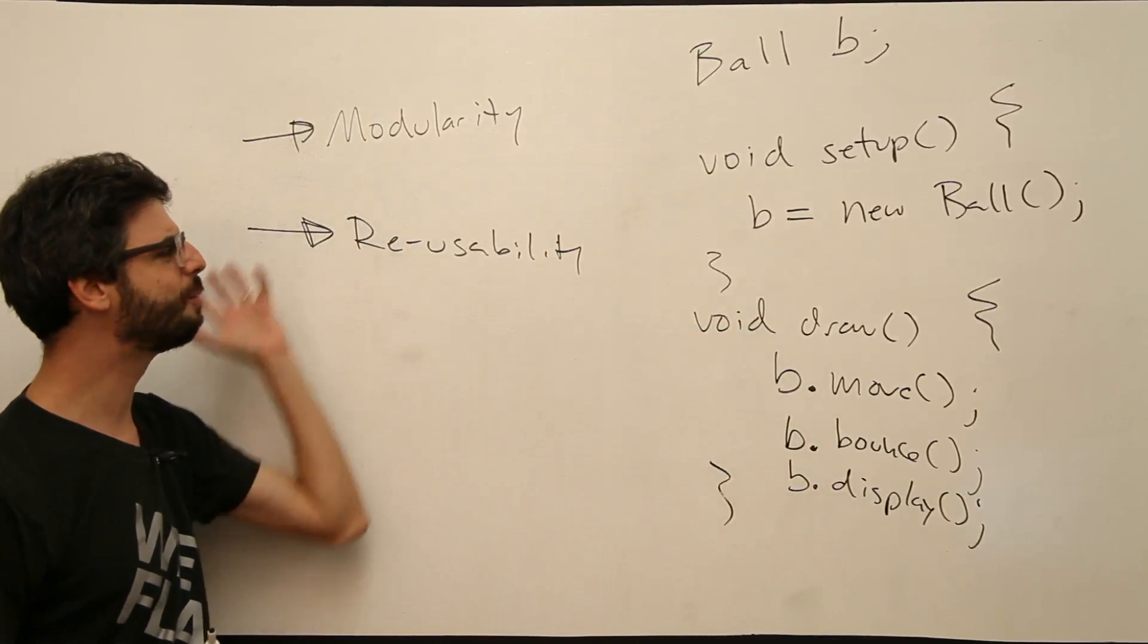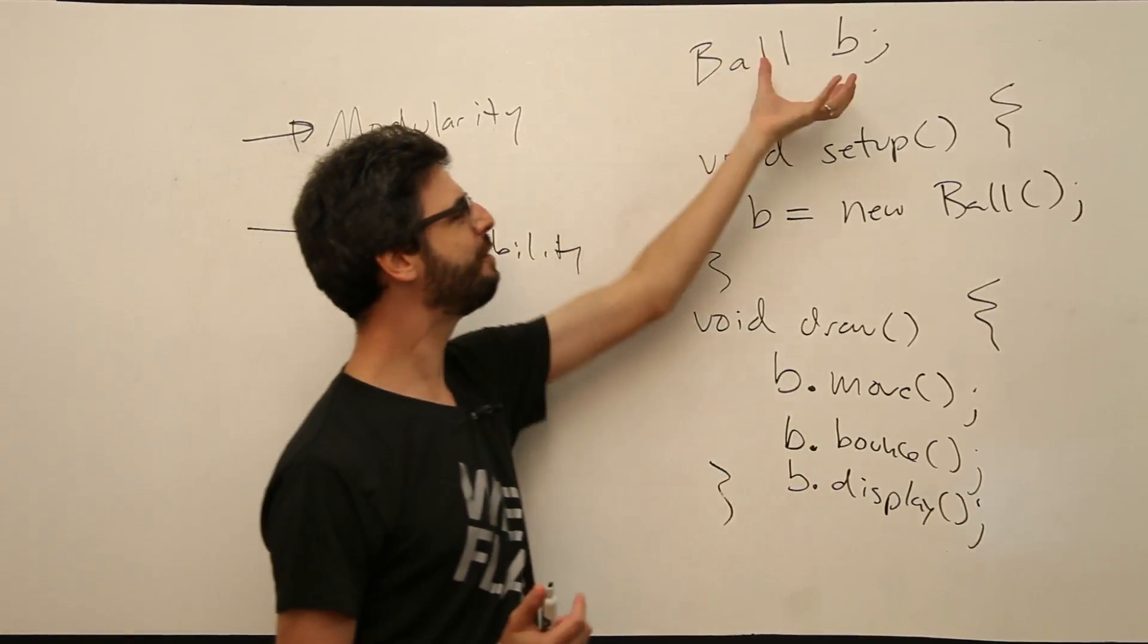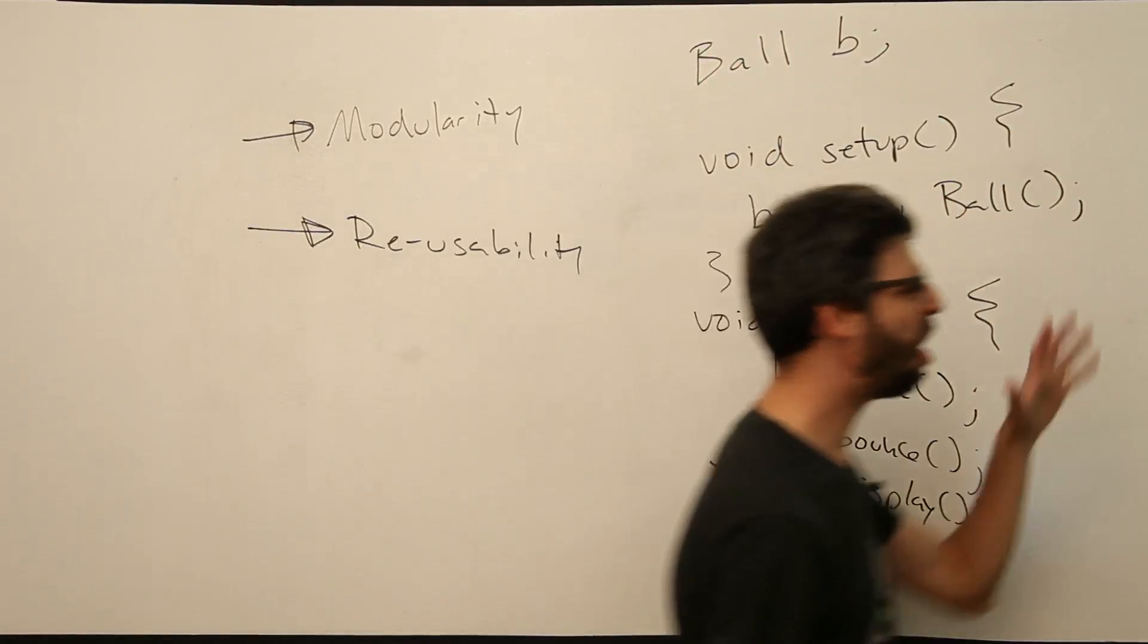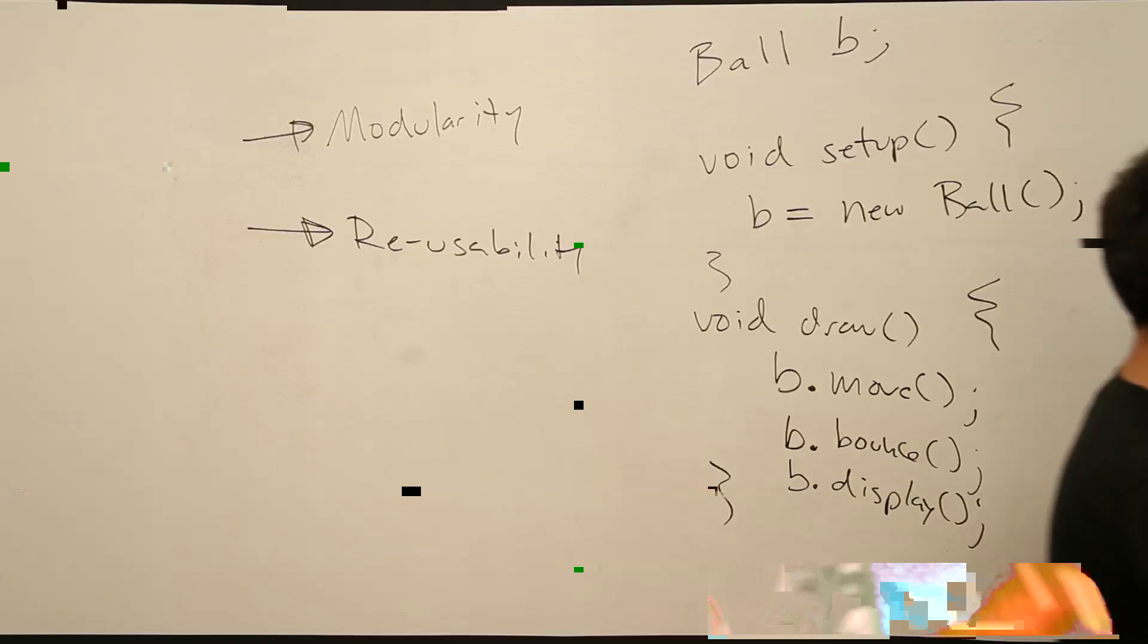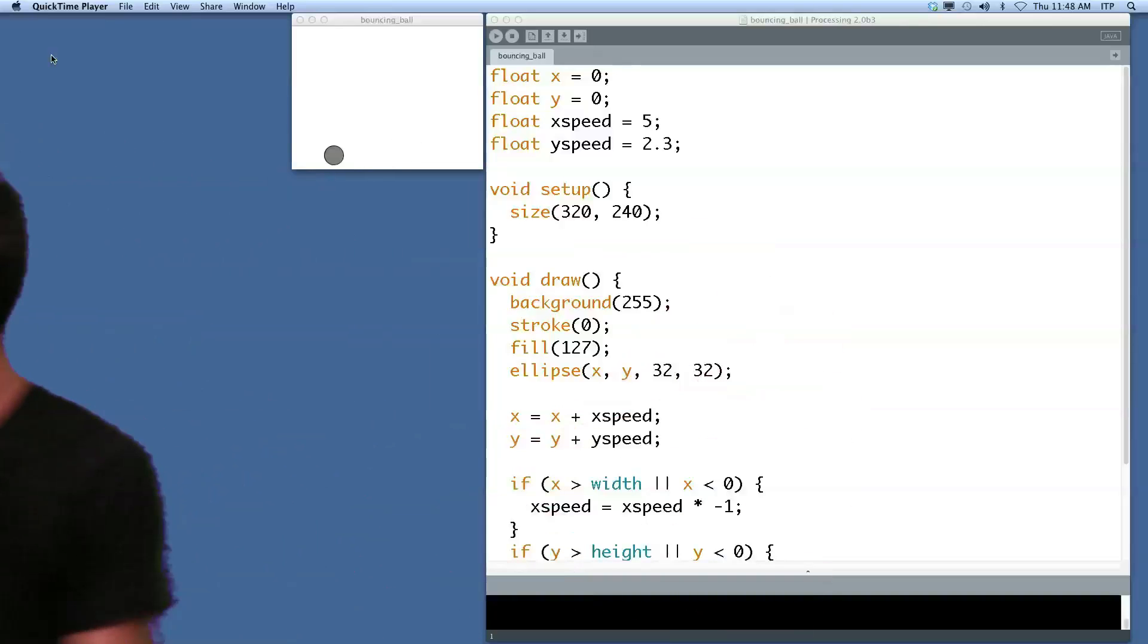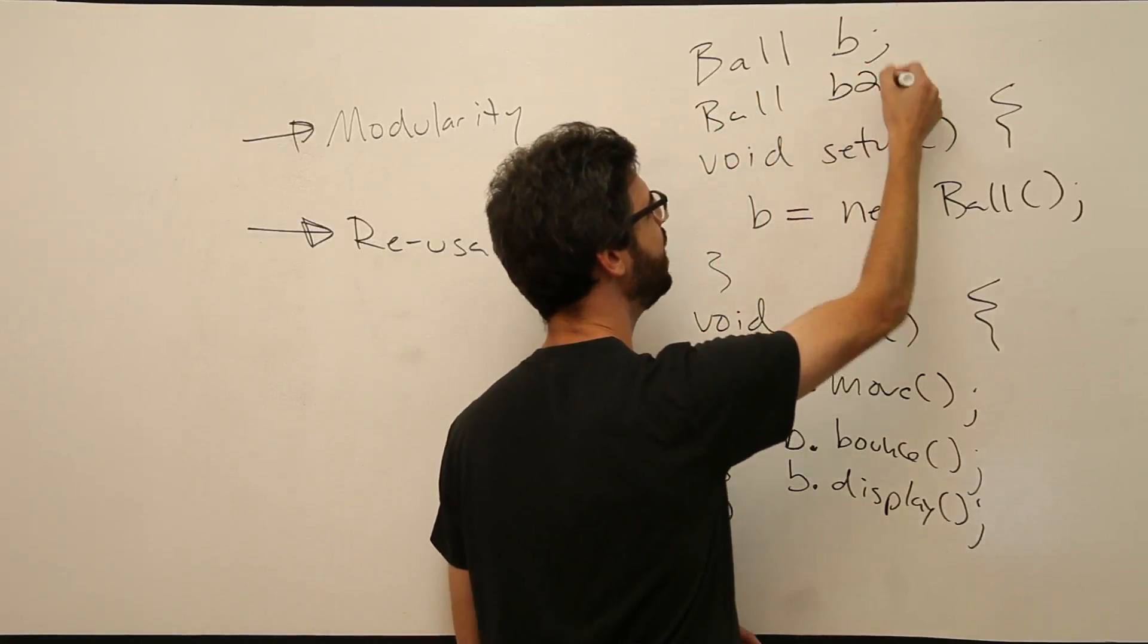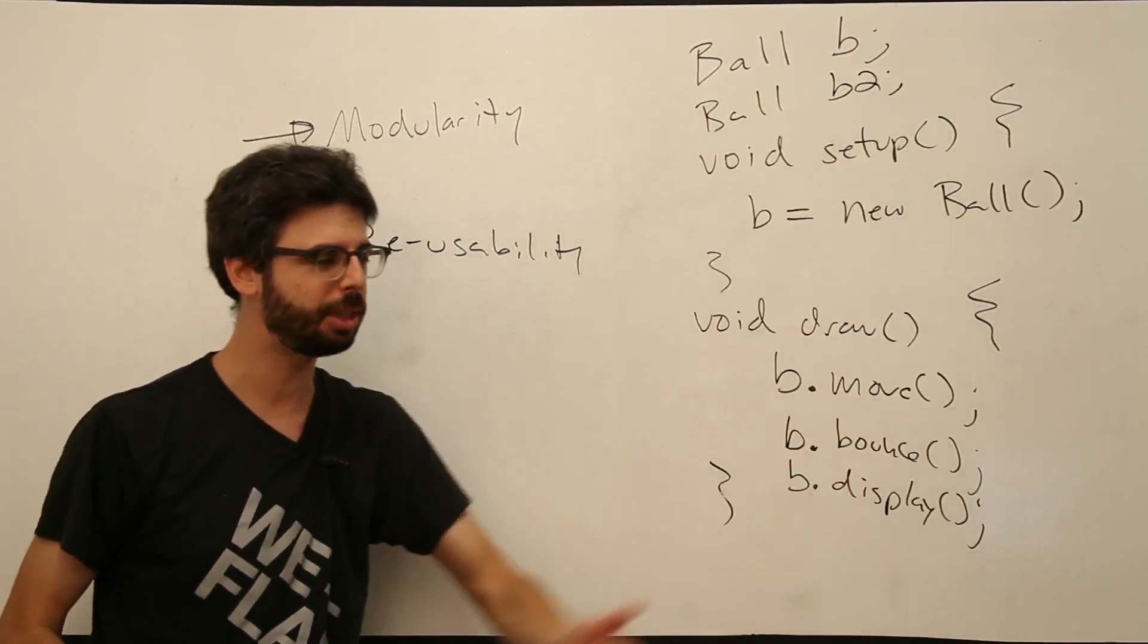We have this idea of reusability. We just have this ball object. If I wanted to add another one, I wouldn't need all these new... I wouldn't need another X and another Y and another X speed and another Y speed. I could just maybe add another ball object. I could say, hey, I want to have two of them. B2 is my second ball object.